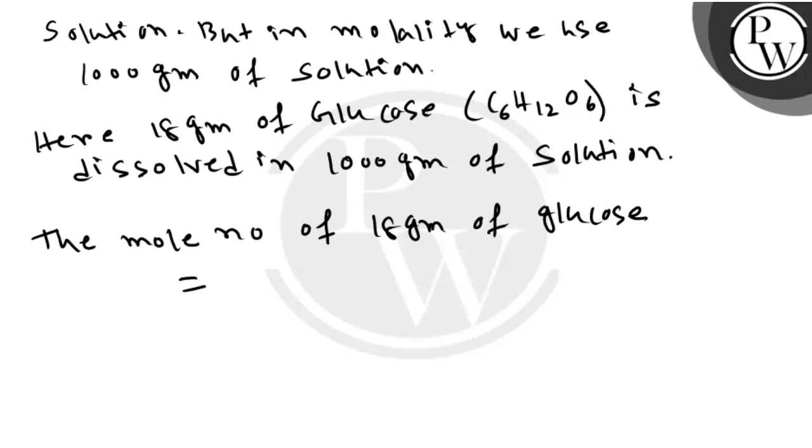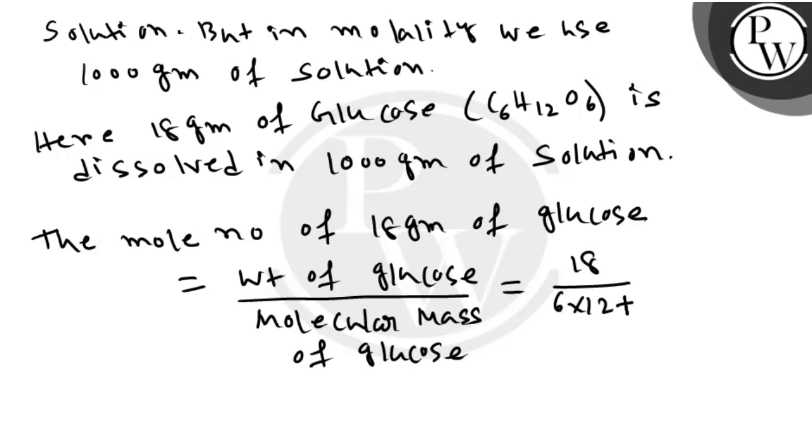...is equal to weight of glucose divided by molecular mass of glucose. The molecular mass equals 18 divided by 180, which equals 0.1.